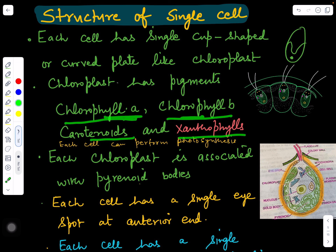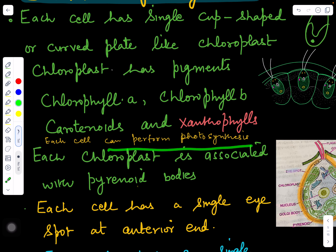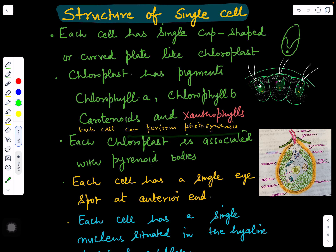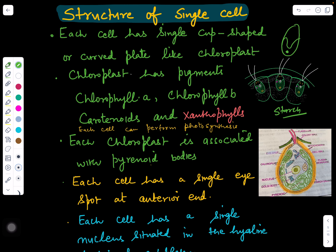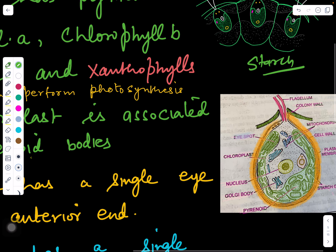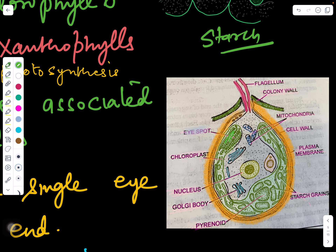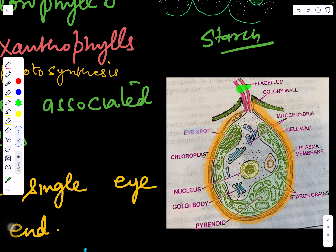Each cell can individually perform the photosynthetic process because each cell has a chloroplast. In each cell, the chloroplast is associated with pyrenoid bodies which help in the synthesis and storage of starch — food in the form of starch is stored in the pyrenoid body. Each cell has a single eye spot at the anterior end — the red eye spot or stigma — whose function is to sense light.